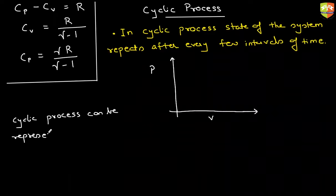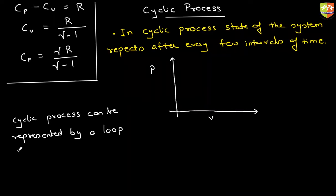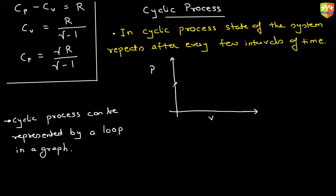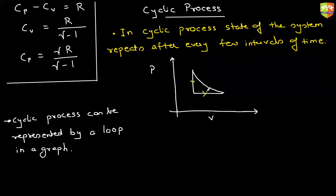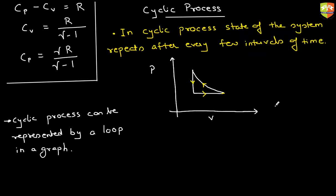The state of the system can be represented by a loop in a graph. A loop goes like this — it keeps happening again and again. If you have to study the cyclic process, you don't need to study all the cycles; it keeps on happening till infinity. Whatever happens in one cycle of repetition, the same thing will happen for all cycles. So you just need to analyze what is happening in one cycle.